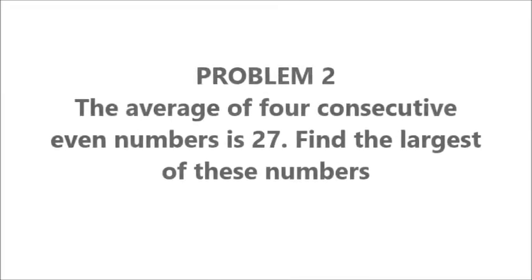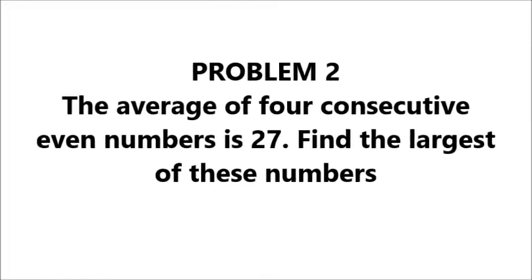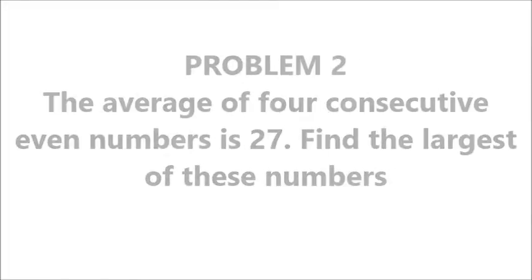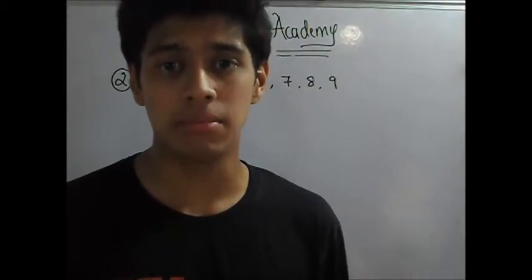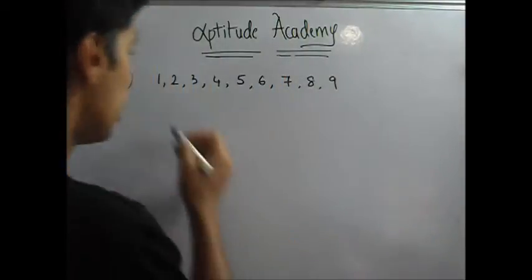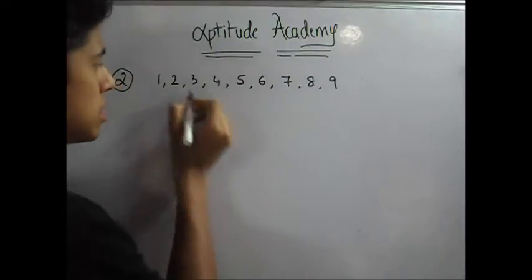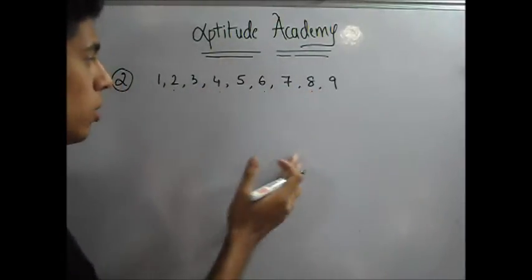Problem 2: The average of 4 consecutive even numbers is 27. Find the largest of these numbers. For the next problem, you need to understand what are consecutive even numbers and how they are represented. Now these are the numbers. What are even numbers? 2, 4, 6 and 8, and we go on.